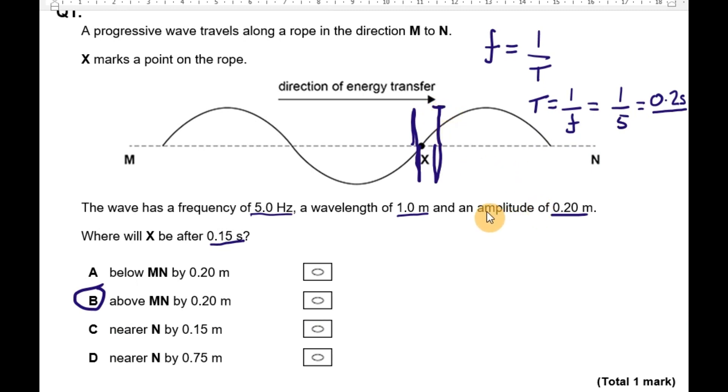We're told the amplitude, which is the displacement, is 0.2 meters. So after 0.15 seconds, the point X will be 0.2 meters above the line MN. The answer is B.